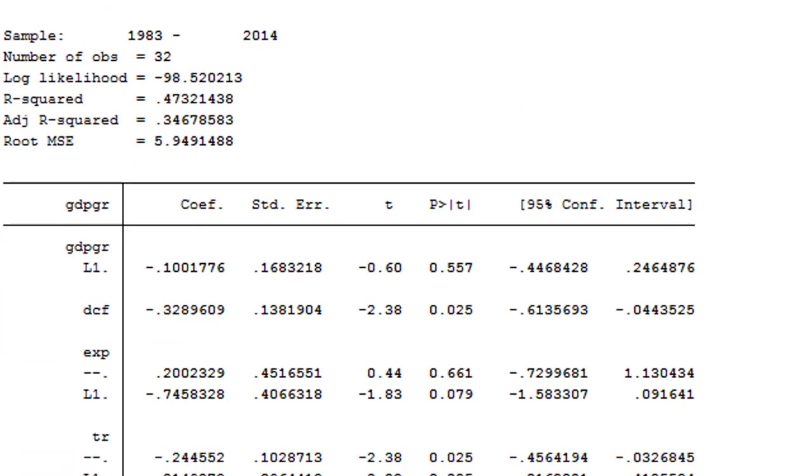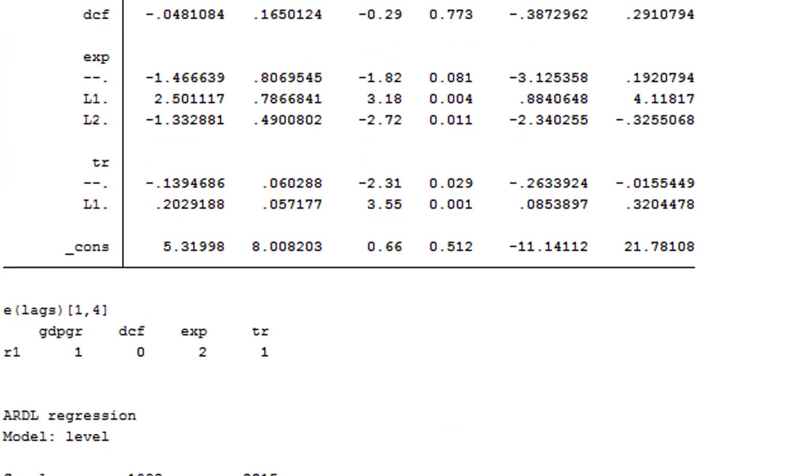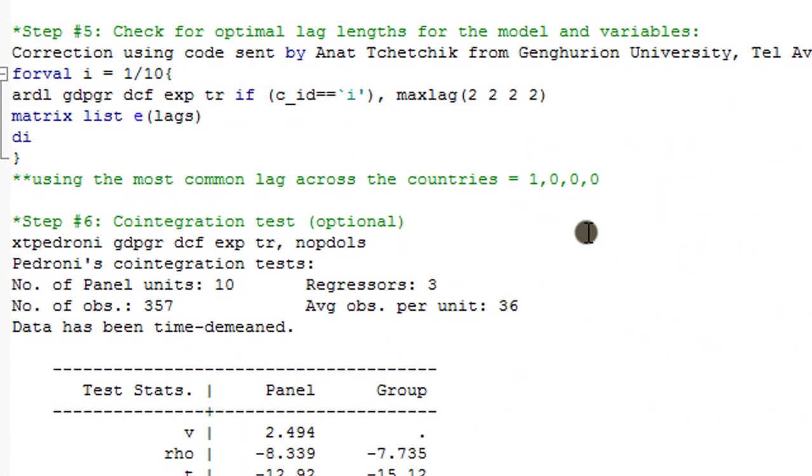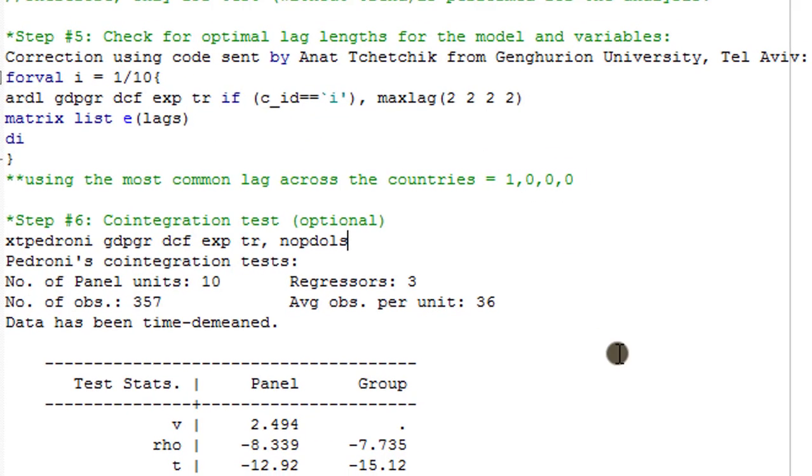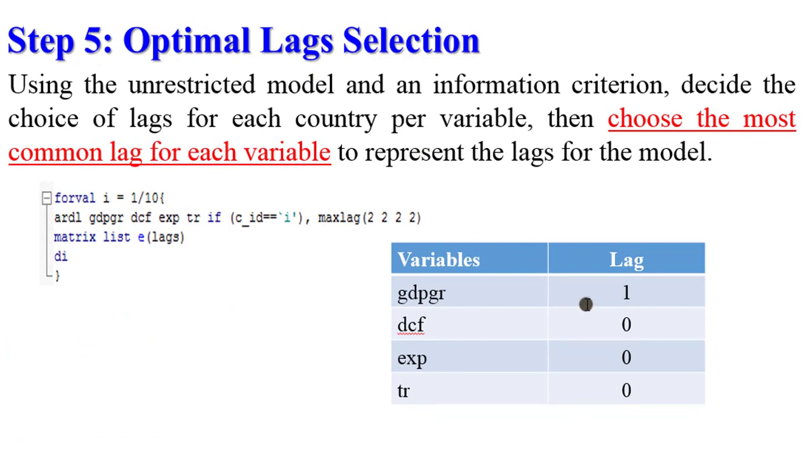The question is deciding the lag length for the model. Since we're running a panel data analysis, choosing the lag length is very simple. All you have to do is choose the most common lag across the countries. For GDP growth rate the most common lag is one, for DCF the most common lag is zero, for expenditure zero, and for trade openness zero. These are the most common lags among the 10 countries, so you use the most common lag for each variable to represent the lag for the model.